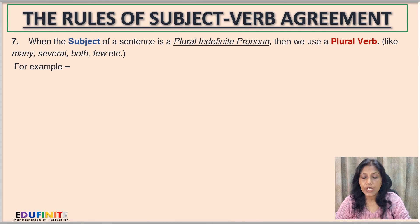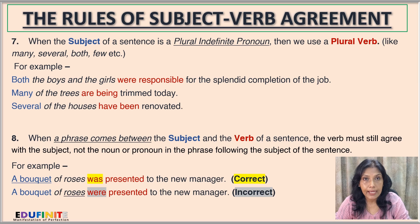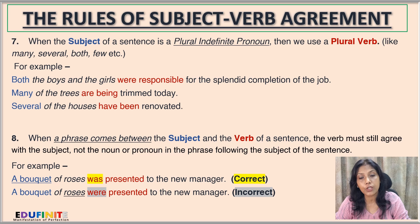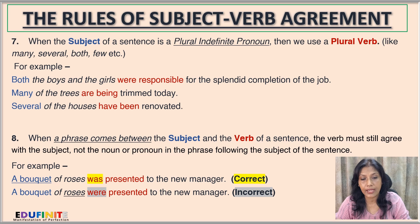Rule number seven: when the subject of a sentence is a plural indefinite pronoun — like many, several, both, few — we use a plural verb. For example: 'Both the boys and the girls were responsible for the splendid completion of the job.' Also: 'Many of the trees are being trimmed today.' And: 'Several of the houses have been renovated' — after 'several' we use the plural verb 'have', not 'has'.